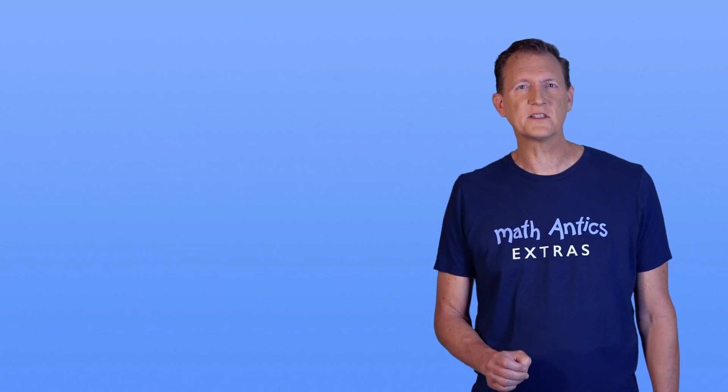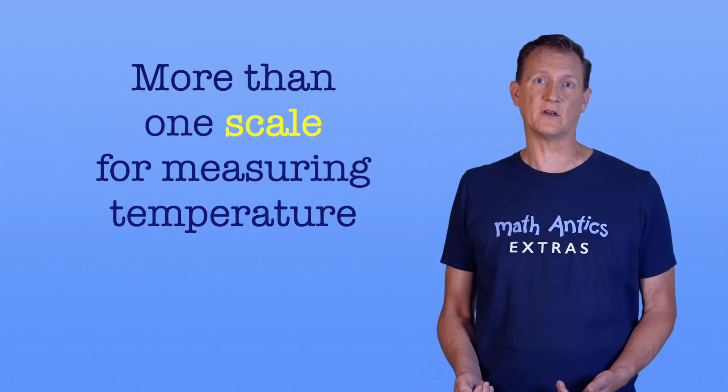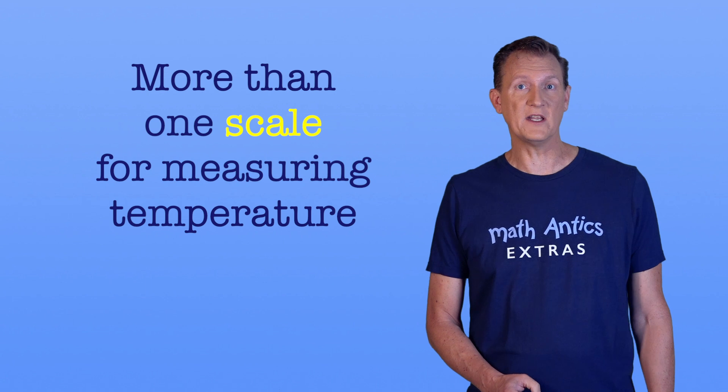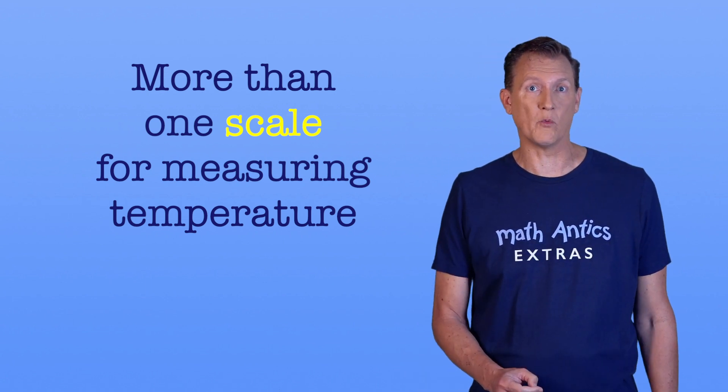But there's still a possibility for confusion. To some of you, 74 degrees is really, really hot! And that's because there is more than one scale for measuring temperature. So to know what temperature something is, you need to know more than just the number of degrees, you also need to know what scale you're using.